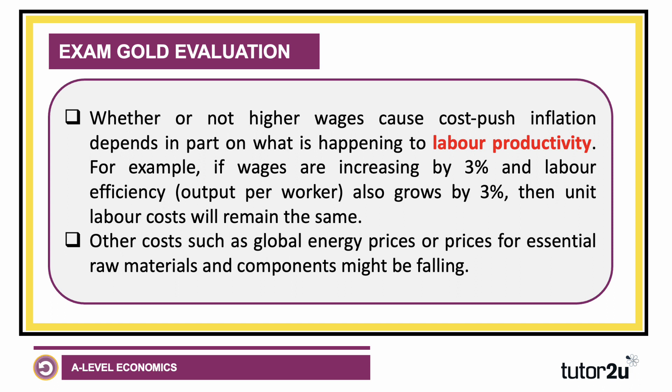Another evaluation point is that other business costs, such as the global price of energy, oil and gas, or prices for essential key raw materials and components, might be going in the opposite direction. So you might get higher wage inflation, but a fall in input price inflation in other parts of the business or across the economy as a whole.